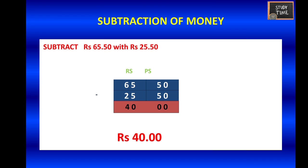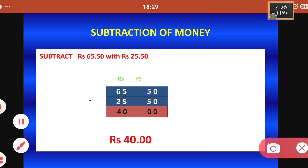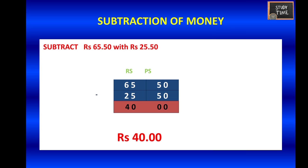Next, subtraction: similarly you have to place rupees and paise separately. 65 rupees 50 paise minus 25 rupees 50 paise: 50 paise minus 50 paise is 0, 5 minus 5 is 0, 6 minus 2 is 4. So the answer is 40 rupees. Whenever you add or subtract, make sure you write the unit — whether it is paise or rupees — correctly.